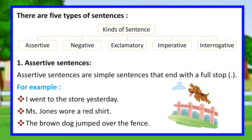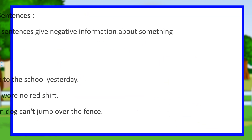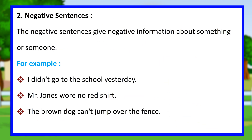More assertive examples: Miss Jones wore a red shirt. The brown dog jumped over the fence. Negative sentences give negative information about something or someone. For example: I didn't go to school yesterday. Mr. Jones wore no red shirt. The brown dog can't jump over the fence.